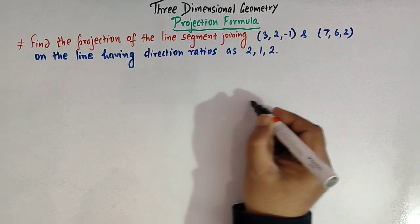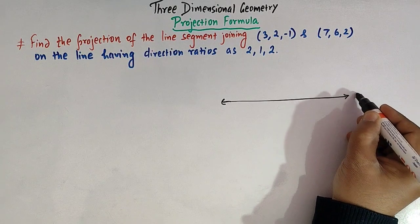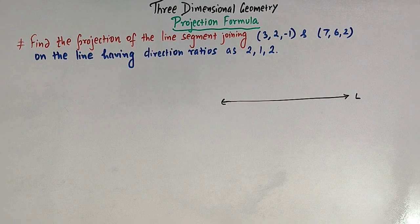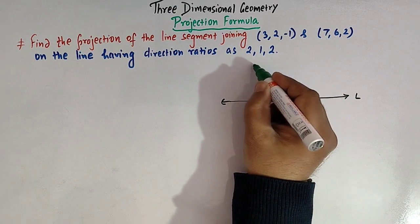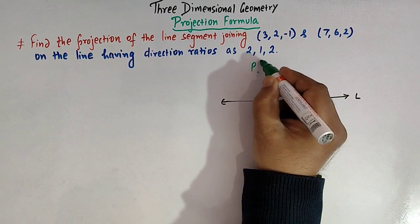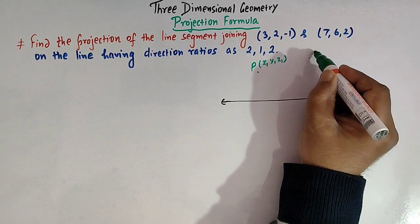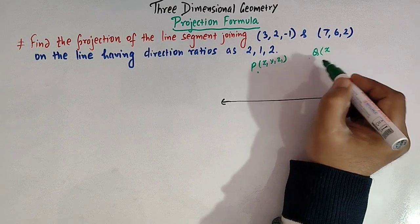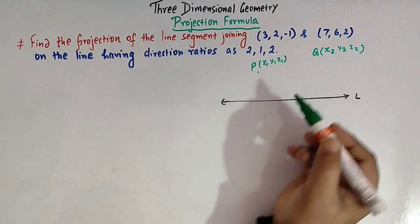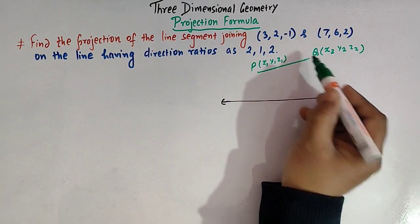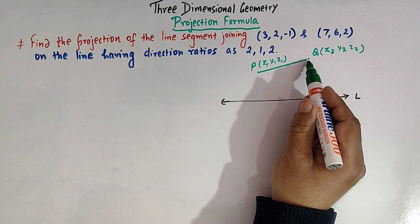Suppose we are given a line — say L. And we are given two points, say P and Q. Suppose point P has coordinates x1, y1, and z1, and the second point Q has coordinates x2, y2, z2. Now if we join these two points P and Q, we get a line segment PQ.